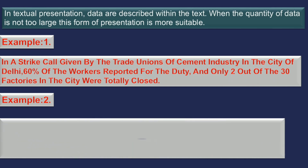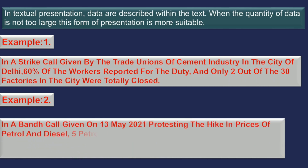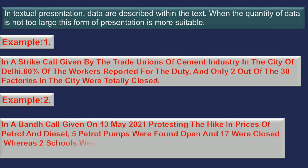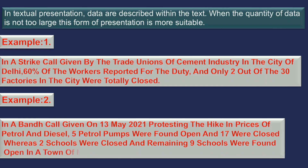In a band call given on 13th May 2021, protesting the hike in prices of petrol and diesel, 5 petrol pumps were found open and 17 were closed, whereas 2 schools were closed and remaining 9 schools were found open in a town of Mumbai.